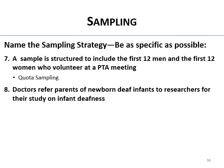Doctors refer parents of newborn deaf infants to researchers for their study on infant deafness. The babies have a specific criteria — you're purposely going out to get deaf infants. That's purposive sampling.